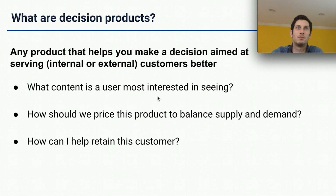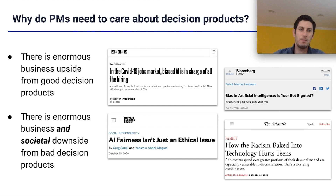Decision products are another level beyond machine learning primitives — for example, pure text recognition or computer vision. You might be wondering why I'm calling them decision products rather than just algorithms or models. I'm using the term very intentionally because it makes clear that these products need the attention of product managers just as much as any UI-based product does. They're not just technical challenges — they also present business, design, policy, and even ethical challenges.